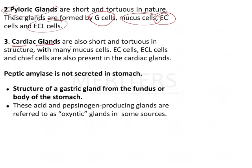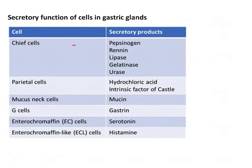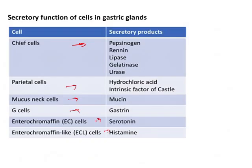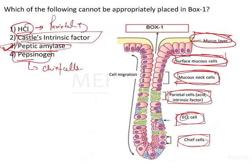Then we have the cardiac glands, which are short and tortuous with many mucus cells. Other cells found include ECL and EC cells and chief cells. Peptic amylase is not secreted in the stomach. The secretions include HCl, Castle's intrinsic factor, and pepsinogen — but not peptic amylase. So the answer is option 3.